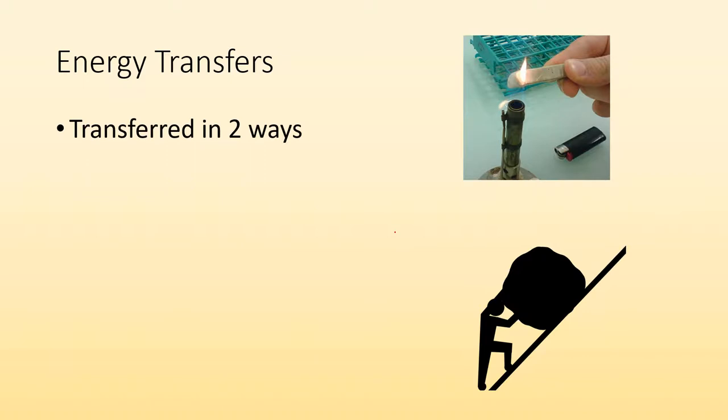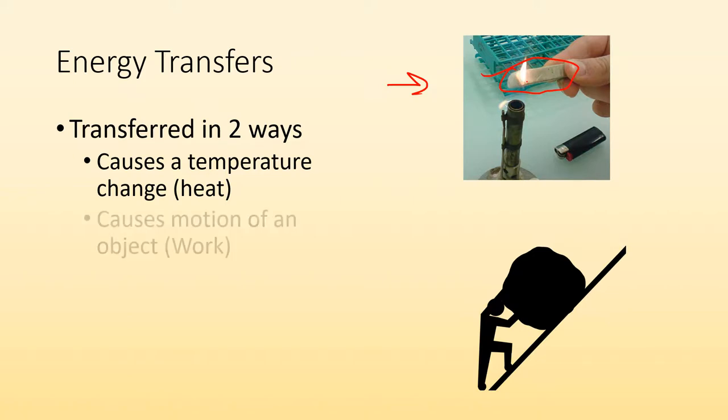So energy transfers can happen in two ways. One is changes in temperature or heat. So they can transfer heat. You can see in this picture, there is heat being added to this stick of wax or whatever it is. Or it can cause motion of an object. For example, I got this guy, maybe it's Prometheus, and he's pushing the boulder up the hill forever. He could be transferring energy that he's got in his muscles and from his food into the boulder and pushing it up the hill by doing work. So we got these two ways of transferring energy.